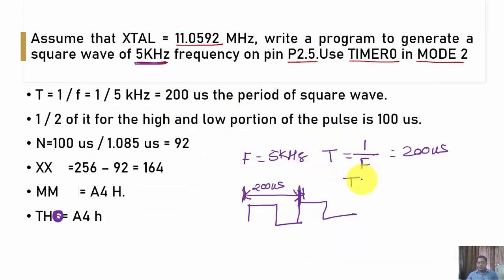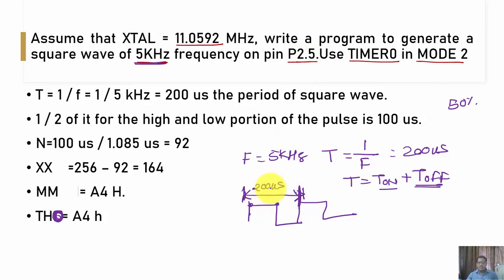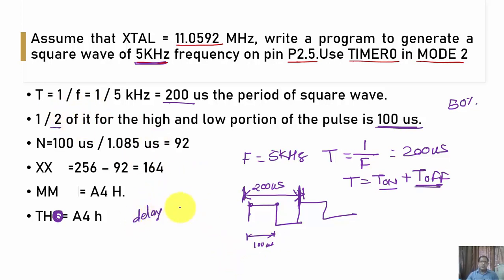Since a square wave implies a 50% duty cycle, T_on equals T_off. The required delay is half the total period: 200 µs ÷ 2 = 100 microseconds. So the required delay is 100 µs. Step 1: divide by 1.085 µs — 100 µs ÷ 1.085 µs = 92.